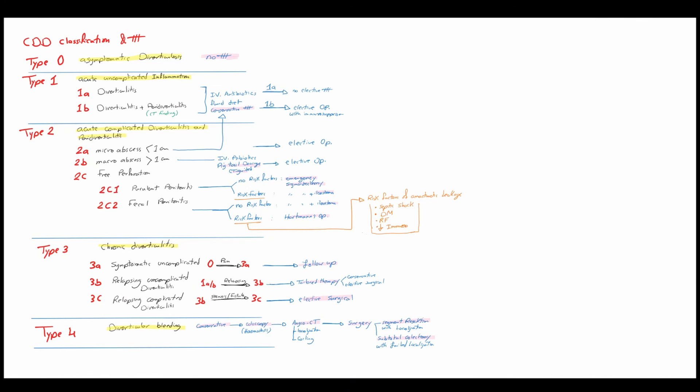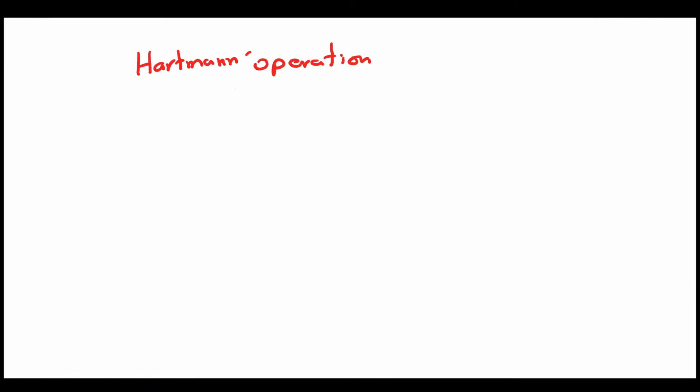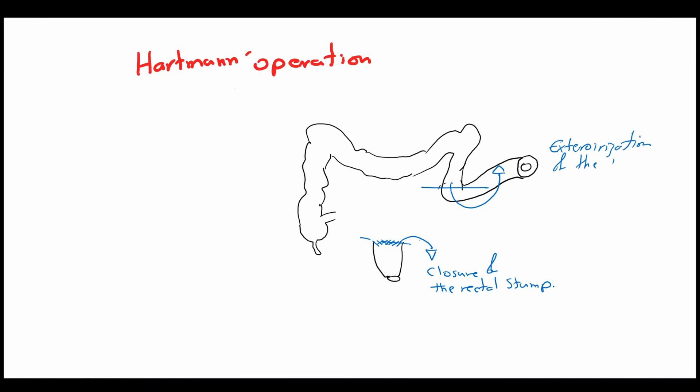At last, we would like to discuss the surgical principles of the Hartmann operation. In cases of severe inflammation of the sigmoid colon with fecal perforation and high risk of anastomosis leakage, the sigmoid colon is resected. To avoid anastomosis, the distal rectal stump is closed blindly and the proximal end of the descending colon is fashioned into an end colostomy. After the inflammation subsides and the peritonitis subsides in 6 to 12 weeks, a recontinuation is possible.